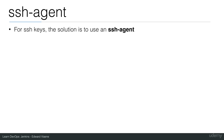For SSH keys, the solution is to use an SSH agent when you want to use commands that need SSH keys in the pipeline itself. I'm not really talking about checking out your repository, because that can be handled by the credentials in Jenkins. It's when you are within the pipeline code and you want to use an SSH key - you can then use the SSH agent.